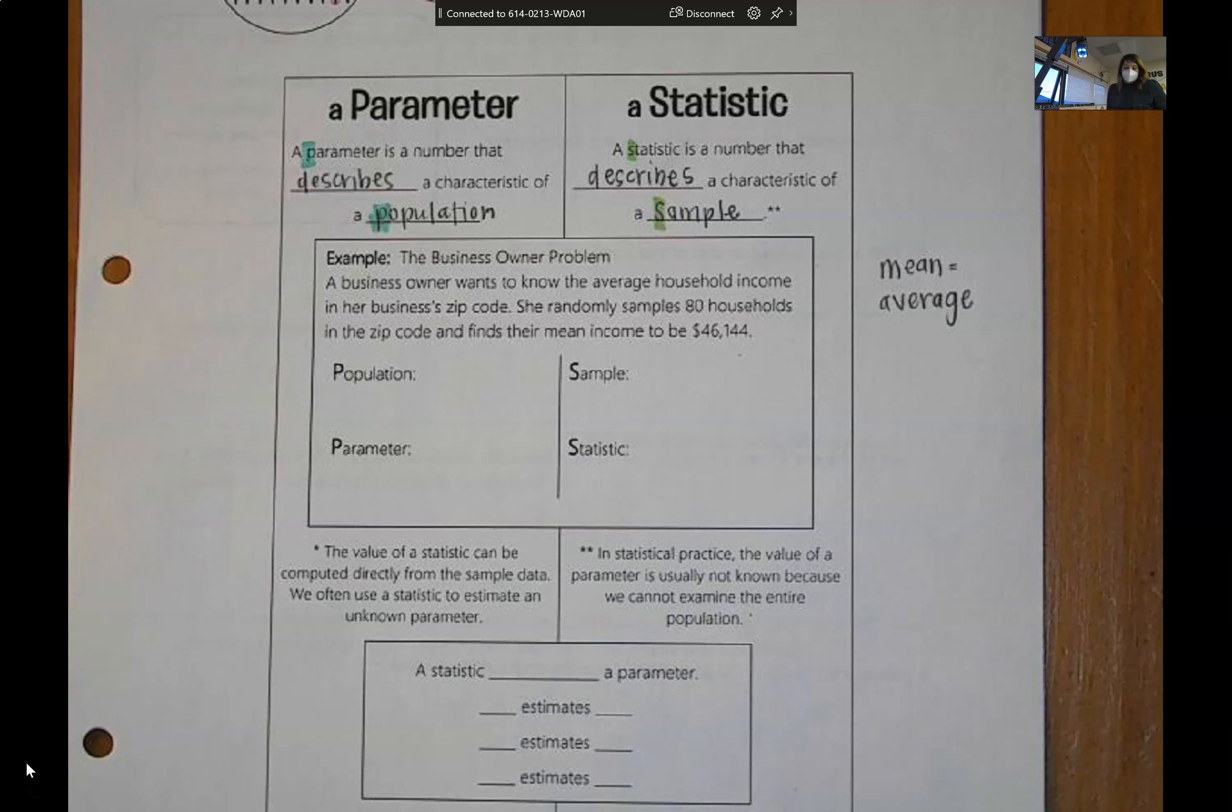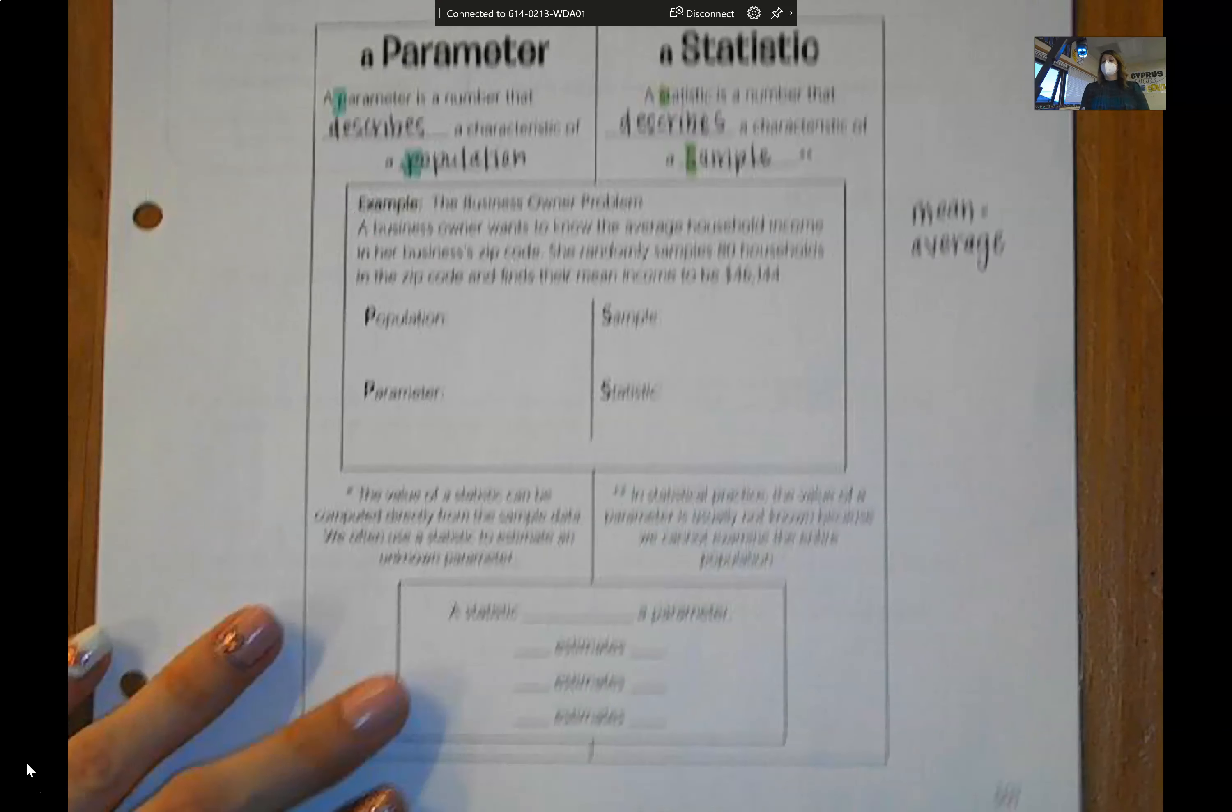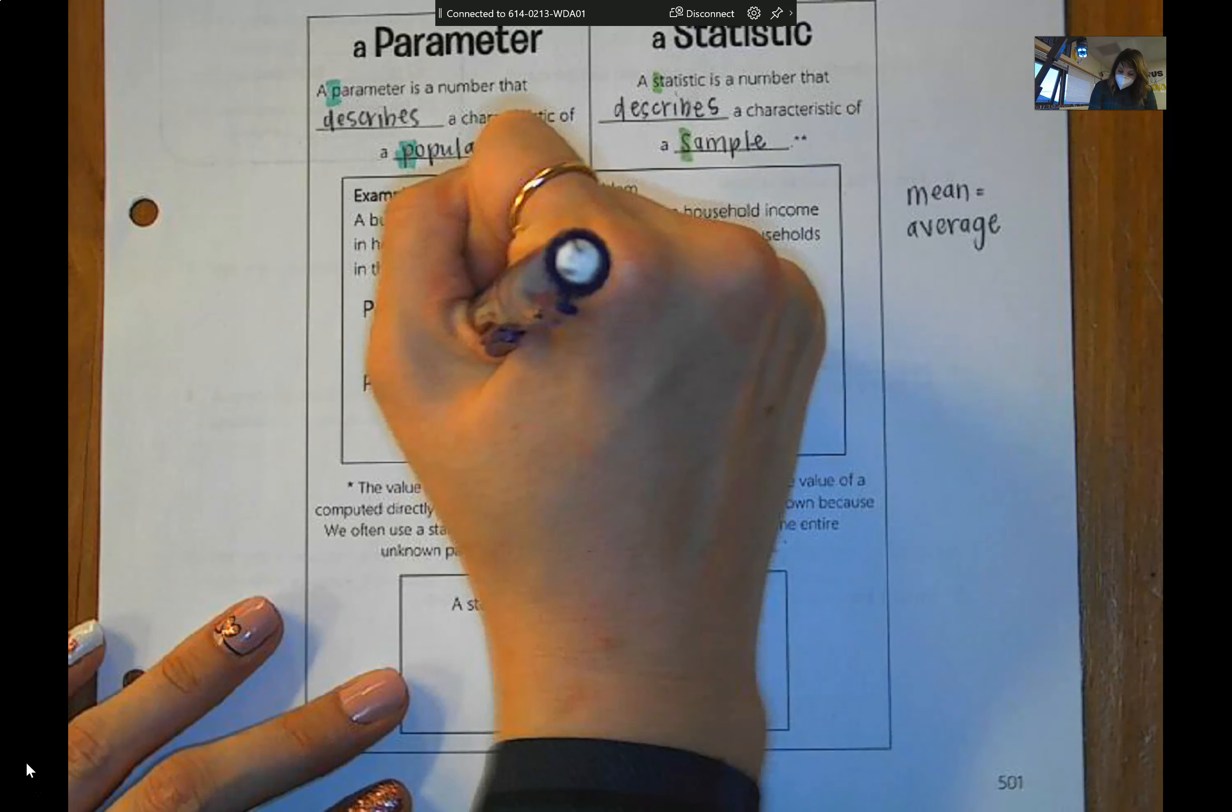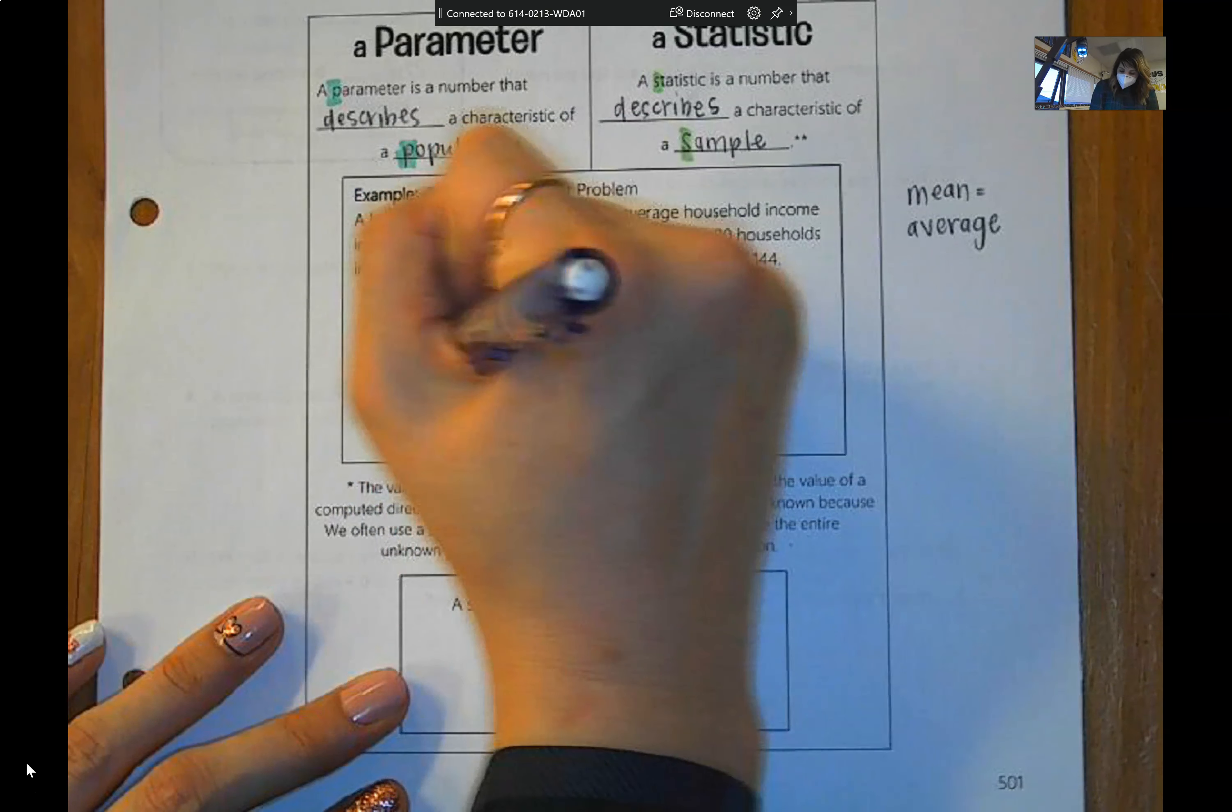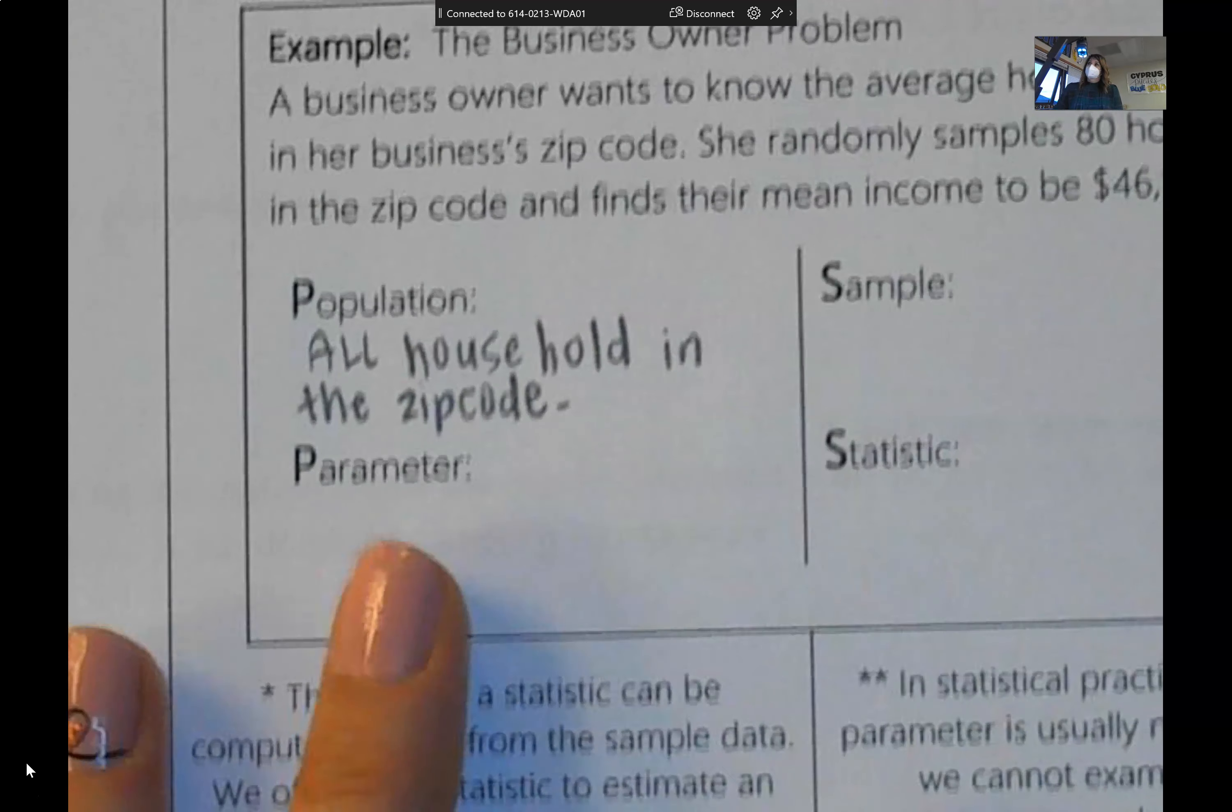You don't need to write that down if you didn't need that reminder. But when we say mean income, we mean average income. So we want to identify the population. Well, in this case, the population is all the households in the zip code. So we're going to write down all households in the zip code. That's our population.